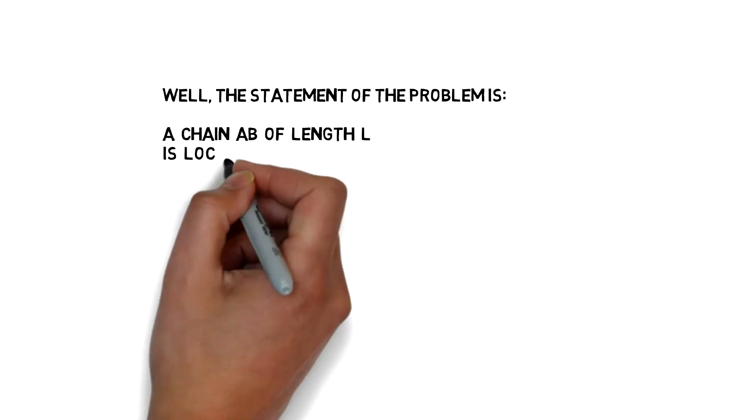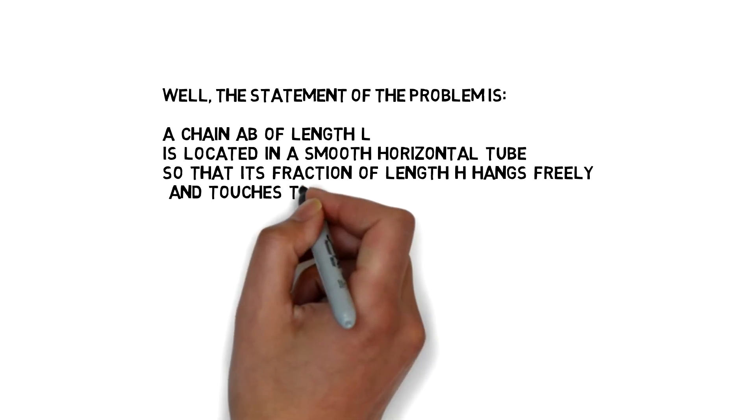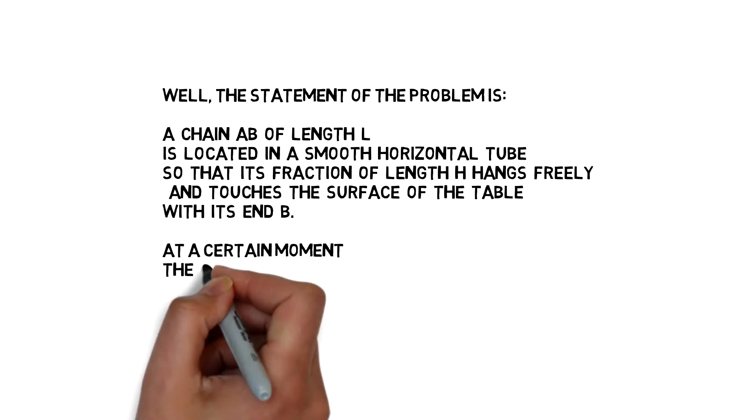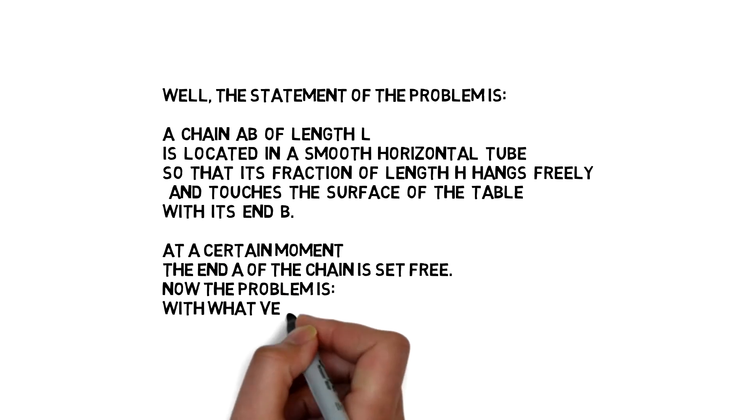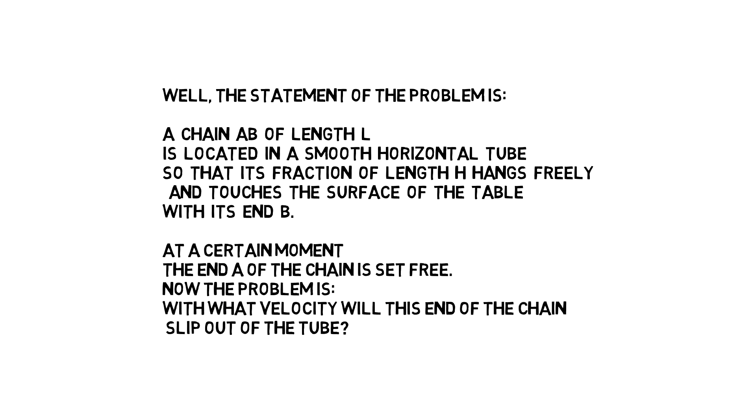The statement of the problem is: a chain AB of length L is located in a smooth horizontal tube so that its fraction of length H hangs freely and touches the surface of the table with its end B. At a certain moment the end A of the chain is set free. Now the problem is, with what velocity will this end of the chain slip out of the tube?